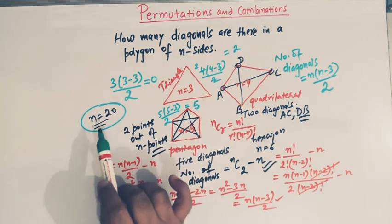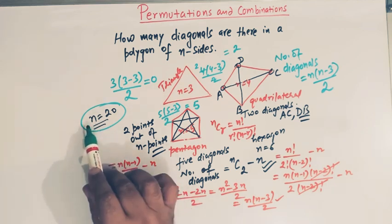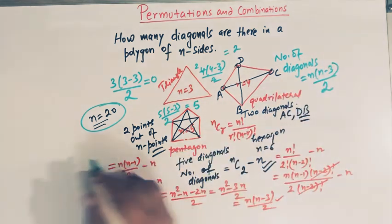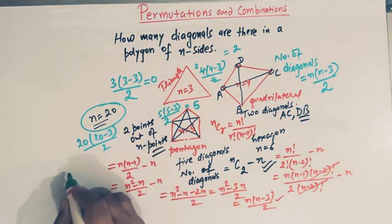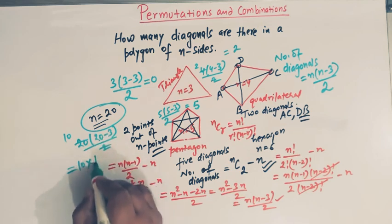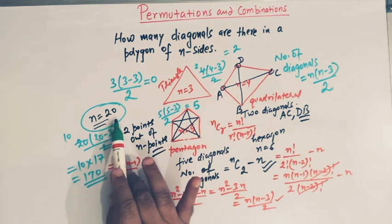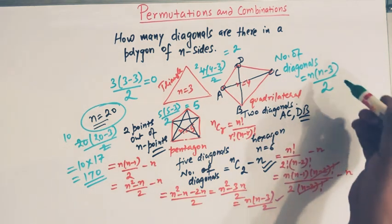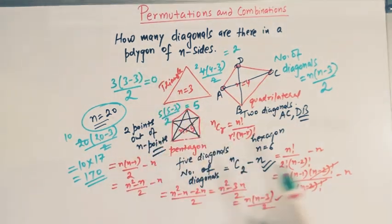Now let us find the number of diagonals for a polygon having 20 sides. We substitute n equal to 20: 20 times (20−3) divided by 2, which is 10 times 17, giving us 170. So there will be 170 diagonals for a polygon of 20 sides. We can apply this formula for any number of sides. This was all about the number of diagonals of a polygon of n sides.